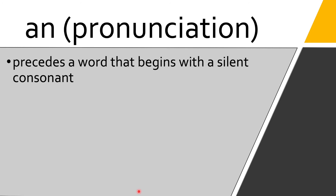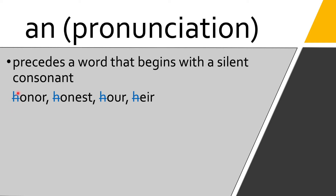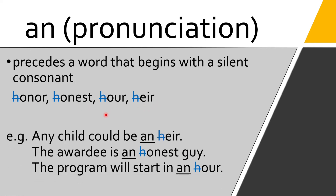What about an additional rule with regard to pronunciation? 'An' is used when it precedes a word that begins with a silent consonant. These words begin with consonant letters but they do not sound like one. We don't say 'honor,' 'honest,' 'our,' or 'hair' with a hard H — these are silent H's. That's the reason why we're going to use 'an' when we use these words. For example: 'Any child could be an heir' — because the H is silent and the sound begins like a vowel.